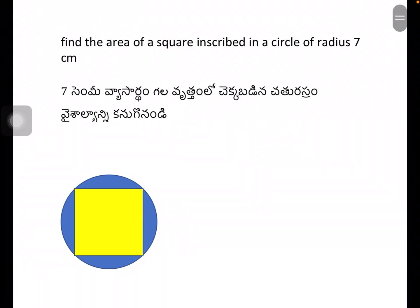Welcome to our channel. In this class, you can find the image here — it's a form of a square in a circle. If you find the area or perimeter, you can find it very easy.